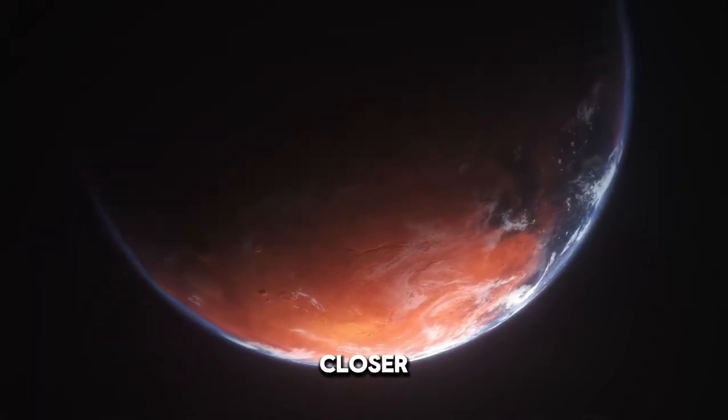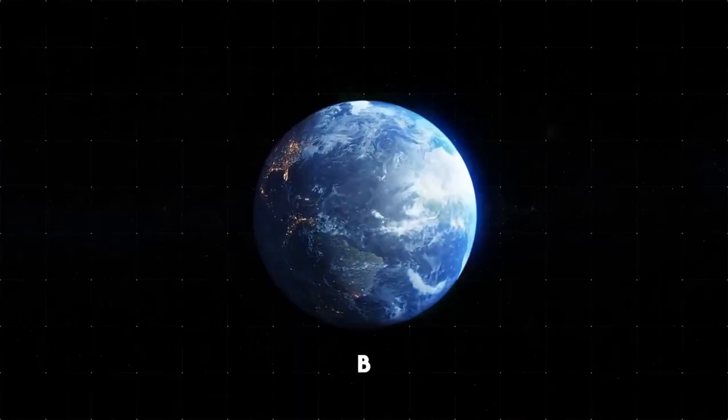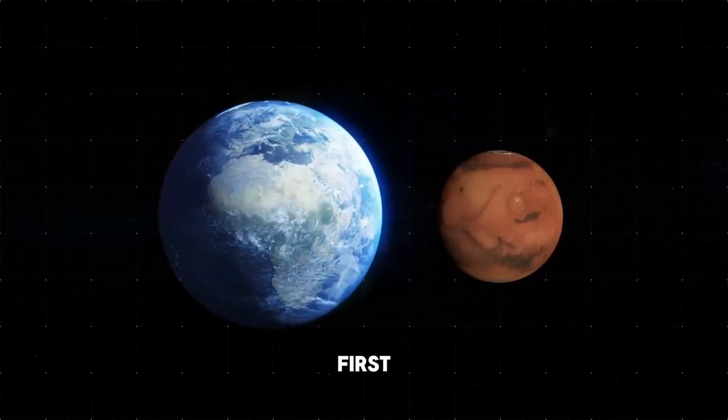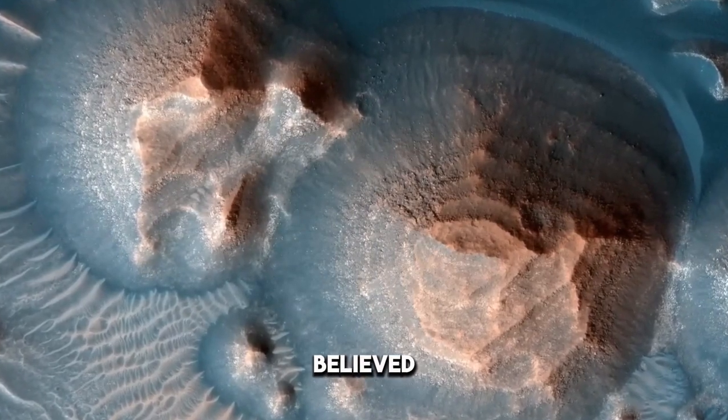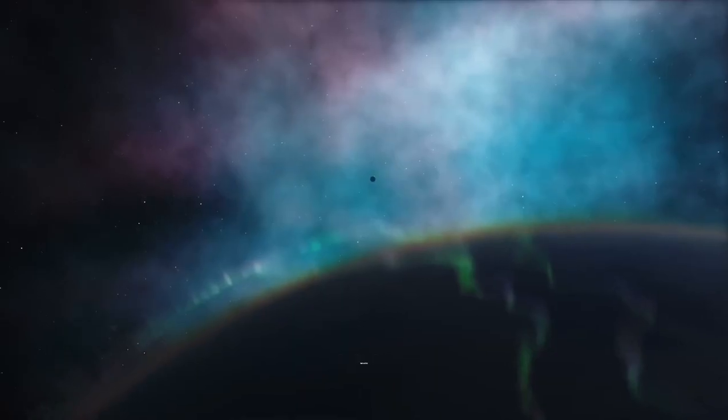Let's take a closer look at Kepler-452b, discovered in 2015. It was the first Earth-like planet found orbiting a Sun-like star. Scientists believed it was the most Earth-like for a few good reasons.